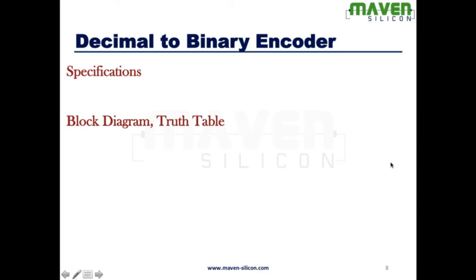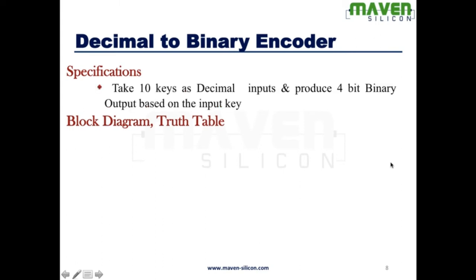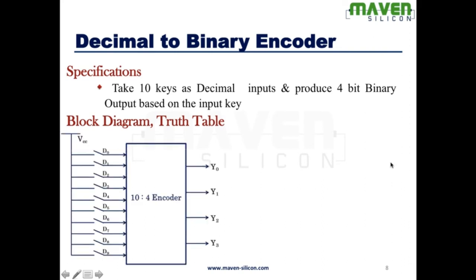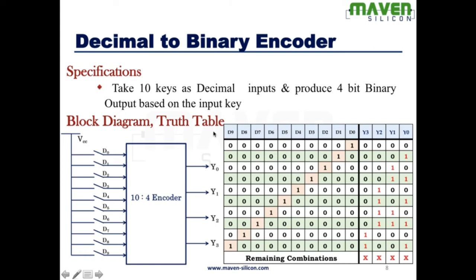Now let's look at a decimal-to-binary encoder and how it works. There are 10 inputs and 4 outputs, so what you need is a 10-to-4 encoder — 10 input keys and a 4-bit binary equivalent output. For example, you press 1, it produces binary 0,0,0,1. You press 5, it produces binary 0,1,0,1. You press 8, it produces binary 1,0,0,0. You can define a truth table with 10 inputs and four outputs where each key produces its equivalent binary.